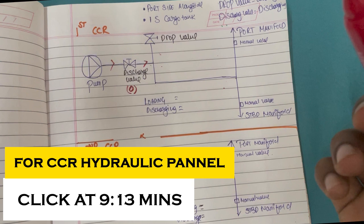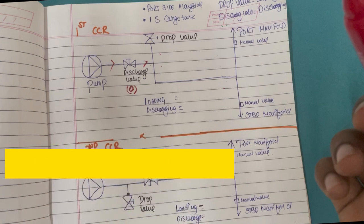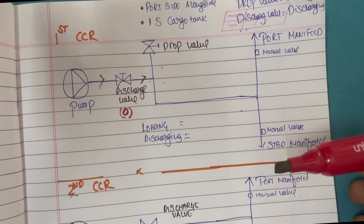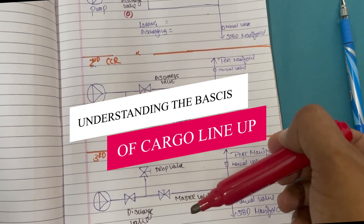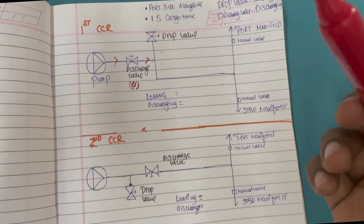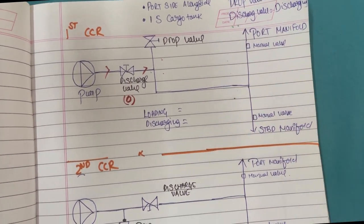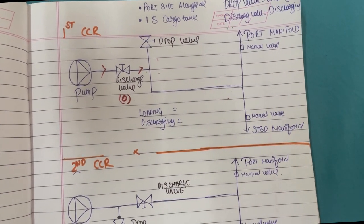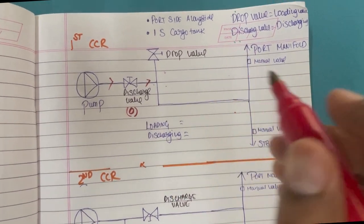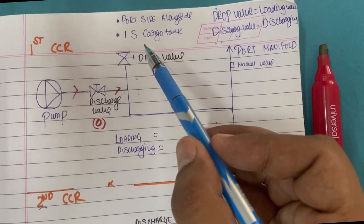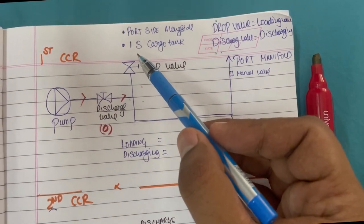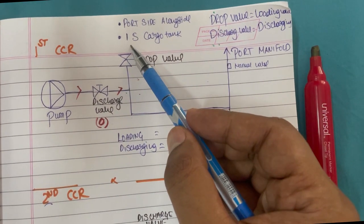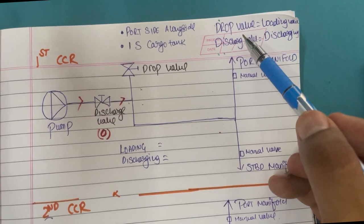Before explaining the CCR screen panels, I've tried to explain them on paper first so we understand better. For simplification, I have drawn three different samples of CCR panel or three different lineups which you can possibly encounter. We will assume that we are port side alongside using a single starboard cargo tank as an example.